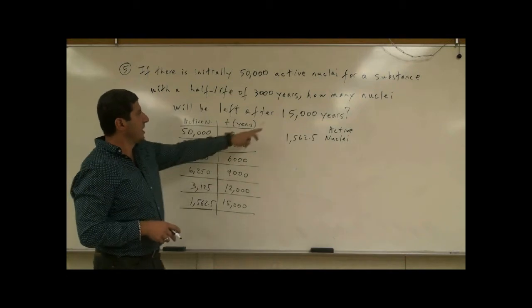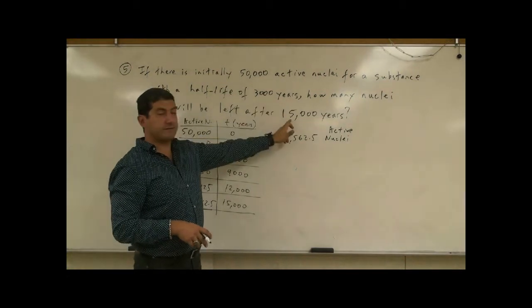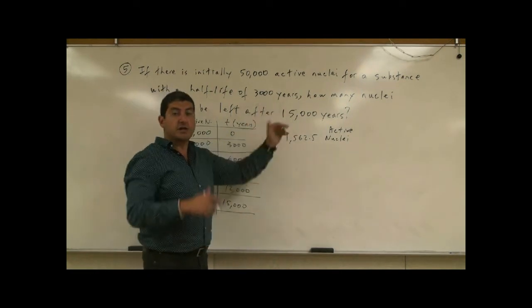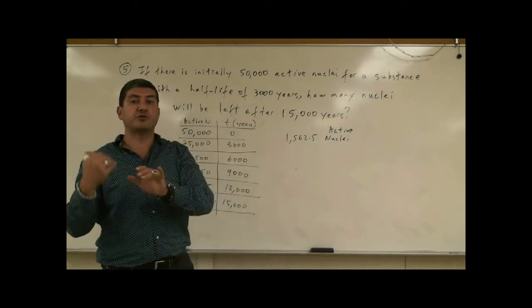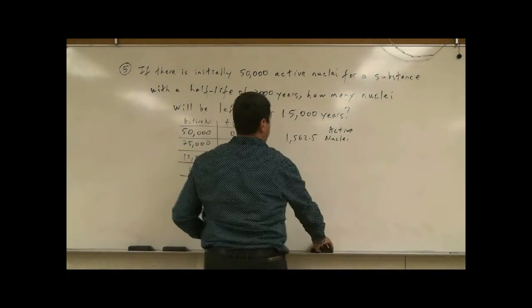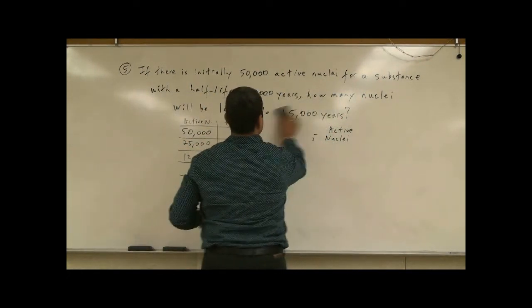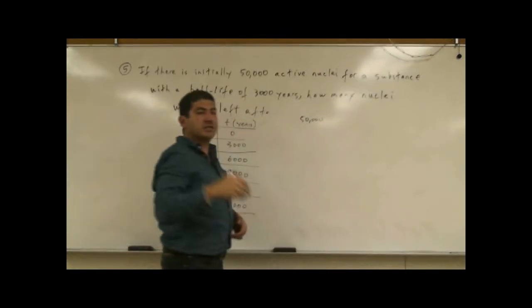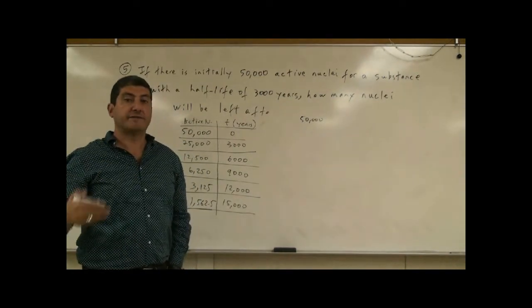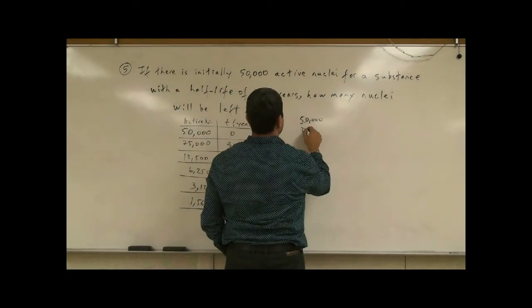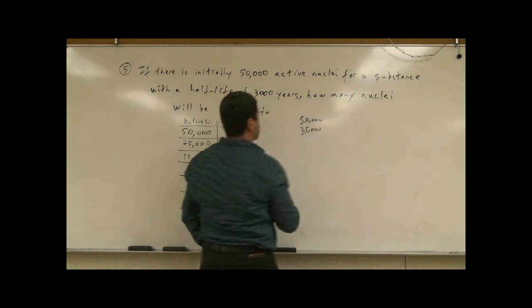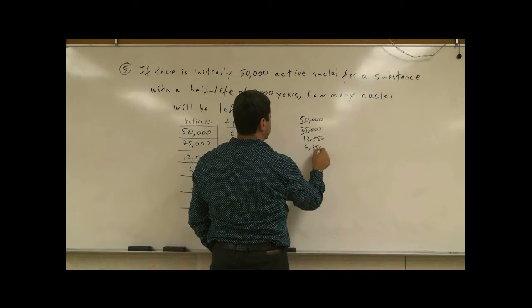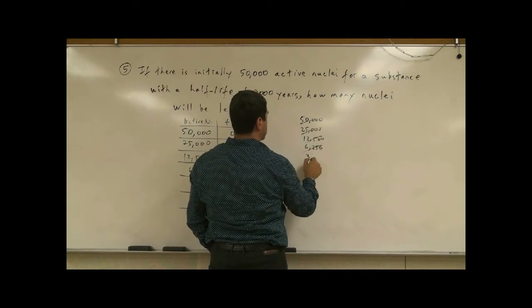We can kind of ask ourselves how many of these half-lives fit into here. 15,000 is five half-lives. So after each half-life, you're cutting it in half. So we can do it more quickly like this. We start with 50,000 and then imagine cutting it into five half-lives. Cutting it once, 25,000. Cutting it one more, 12,500. Cut it one more, 6,250. Cut it one more, 3,125.